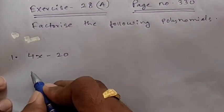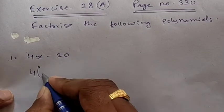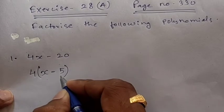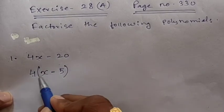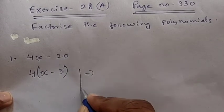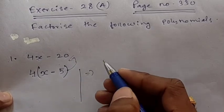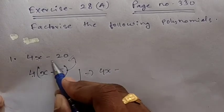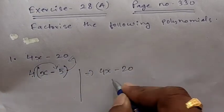Suppose if I take 4 common here. If 4 is taken common then we can write it as 4(x - 5). How? 4 into x will be 4x, minus 4 fives are 20. So if we multiply this, the answer will come the same. Clear?